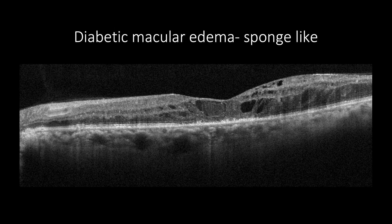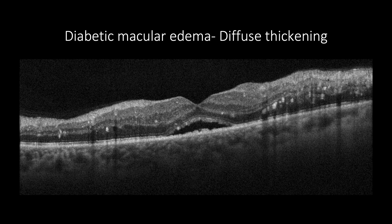On the other hand, diabetic macular edema may appear as sponge-like increased retinal thickening with empty and non-empty intraretinal cysts that appear as oval or circular and can be combined with subretinal fluids. Those types of edema usually respond well to VEGF blockade agents. Sometimes, diabetic macular edema can be presented with diffuse thickening without any intraretinal cysts and can be associated with subretinal fluids.